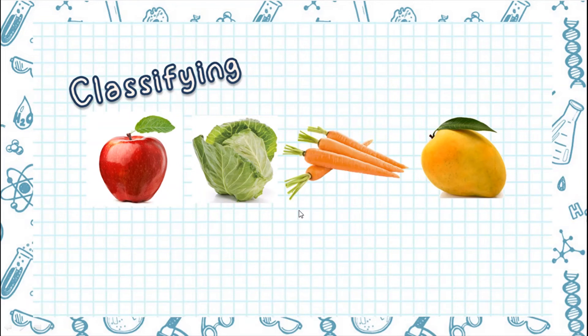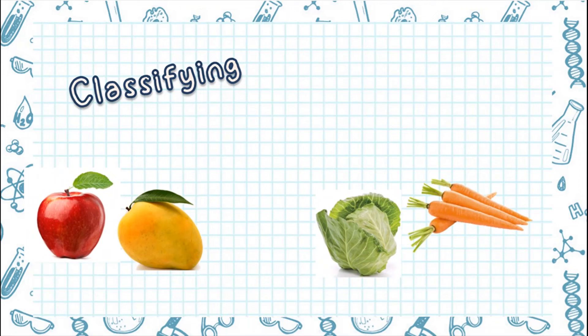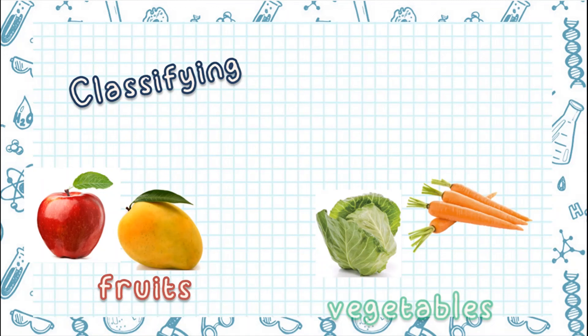Now let's go to classifying. Classifying means to put alike things together. You can classify things based on a similar characteristic. Look at the four pictures. How are you going to classify these four food? That's right! You can classify them into fruits and into vegetables.